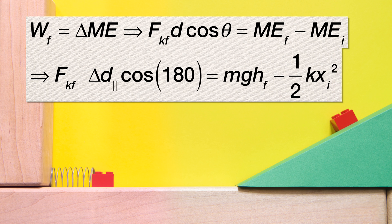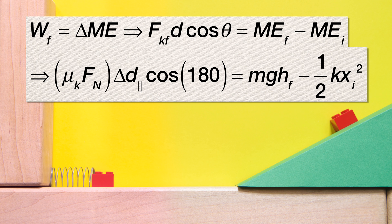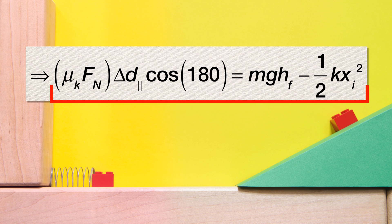Substituting in the equation for the force of kinetic friction gives us the coefficient of kinetic friction times force normal times the displacement in the parallel direction times the cosine of 180 degrees, which equals mass times acceleration due to gravity times height final minus one half times the spring constant times the initial compression of the spring squared. Let's put that in our equation holster because we need to find the force normal.